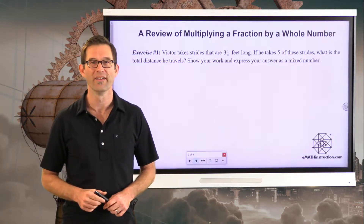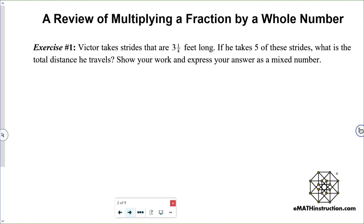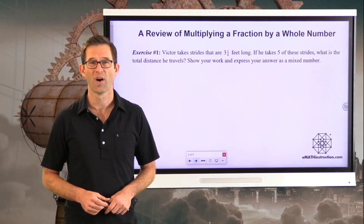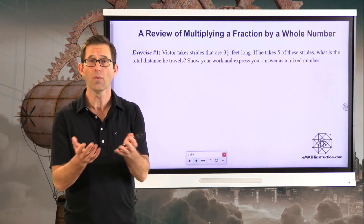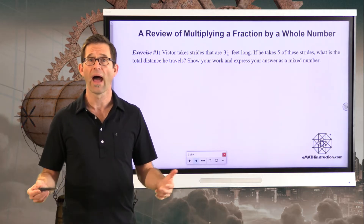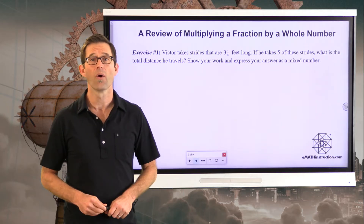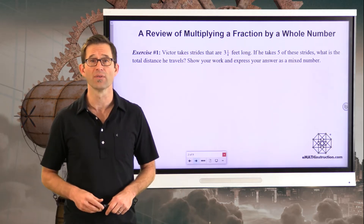Exercise number one. Victor takes strides that are three and one-quarter feet long. If he takes five of these strides, what is the total distance he travels? Show your work and express your answer as a mixed number. Pause the video and see if you can figure out the total distance that Victor travels.